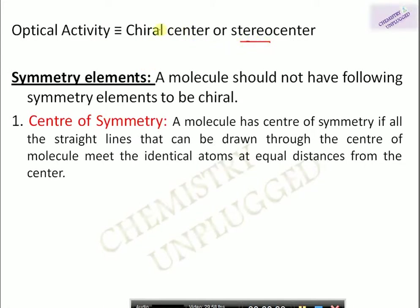If a molecule has a chiral or stereocenter it is optically active. A chiral center is a center attached with four different groups — when a carbon is attached with four different groups we consider it is chiral. But this is not always true. According to the modern definition, a molecule should not have symmetry elements like center of symmetry, plane of symmetry, and improper axis of symmetry to be chiral.